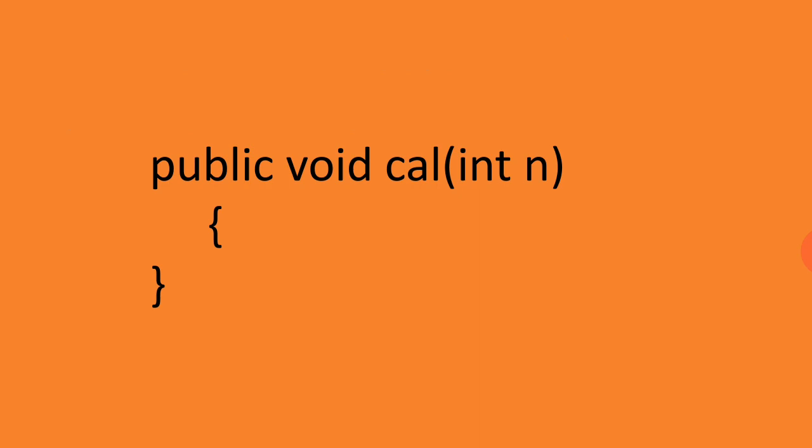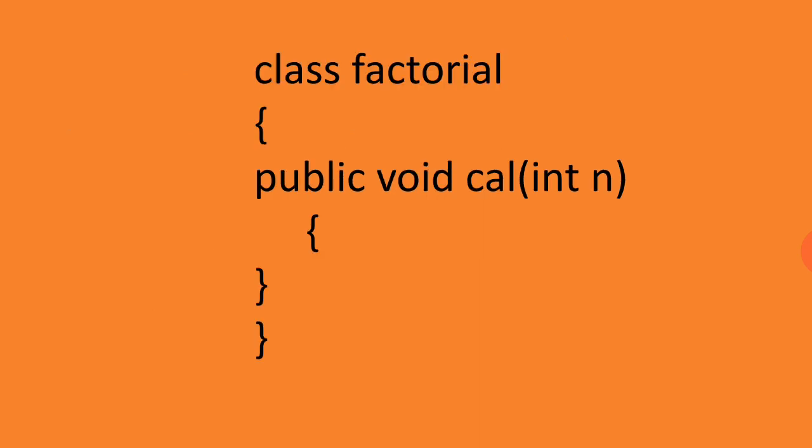This function will be kept inside the class, so we have class factorial, curly brace open, that means the definition of the class begins. Then public void cal is a function with int n, number is passed. Its factorial is to be calculated. Curly brace open and close for the function, and finally last curly brace closed means the definition of the class is over.